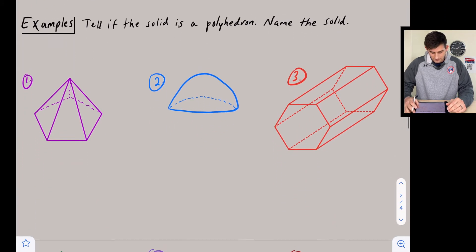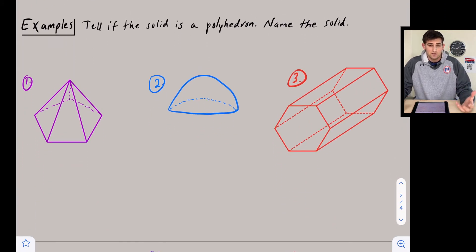Now we're going to look at some examples of different shapes and tell if it's a polyhedron, and if it is, what shape it is.